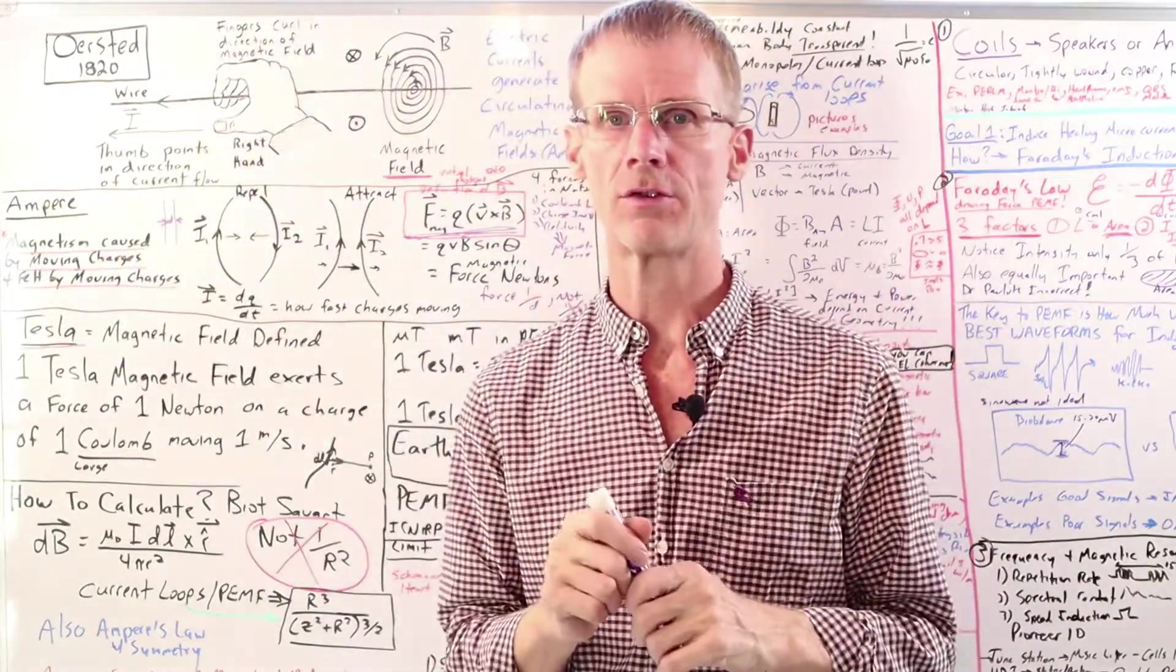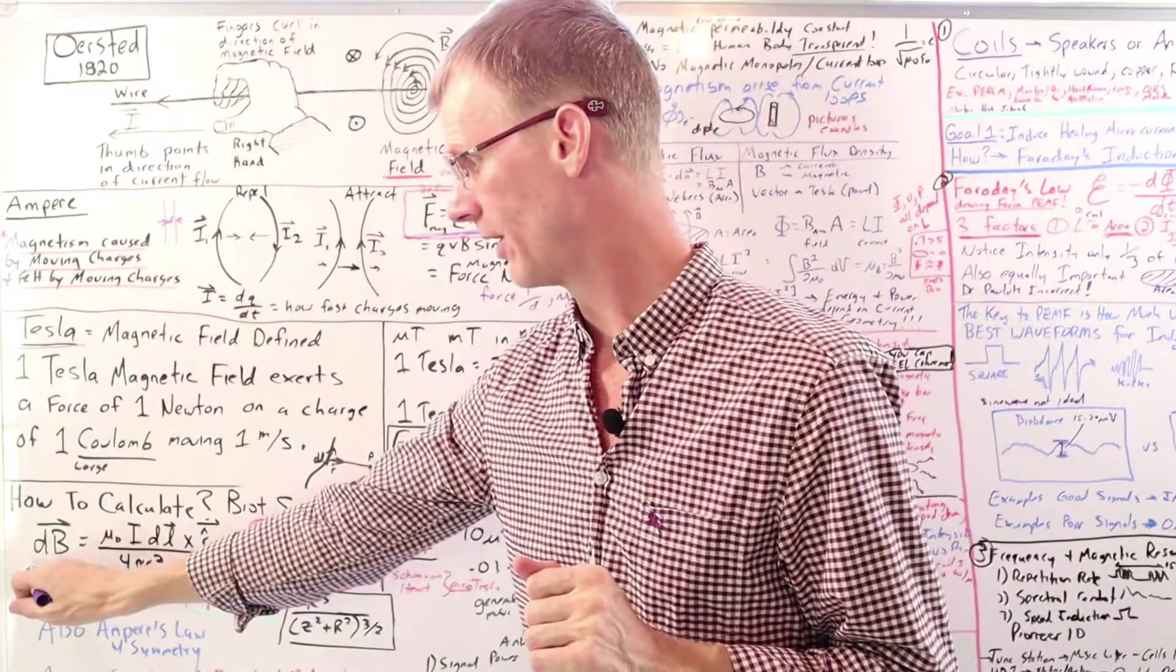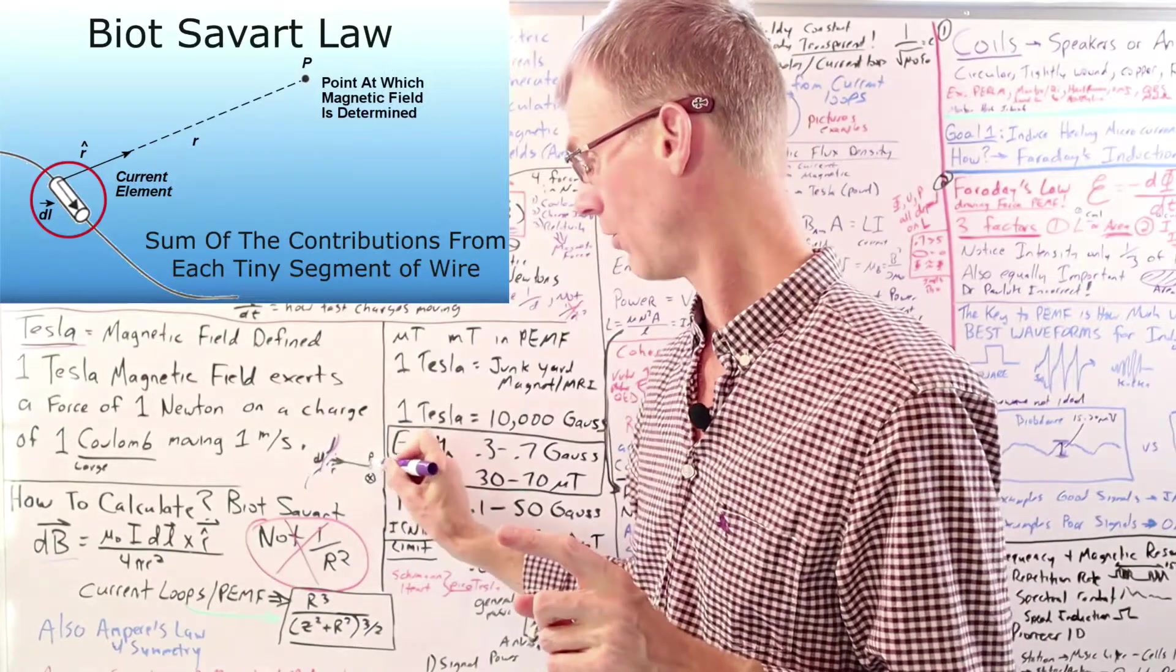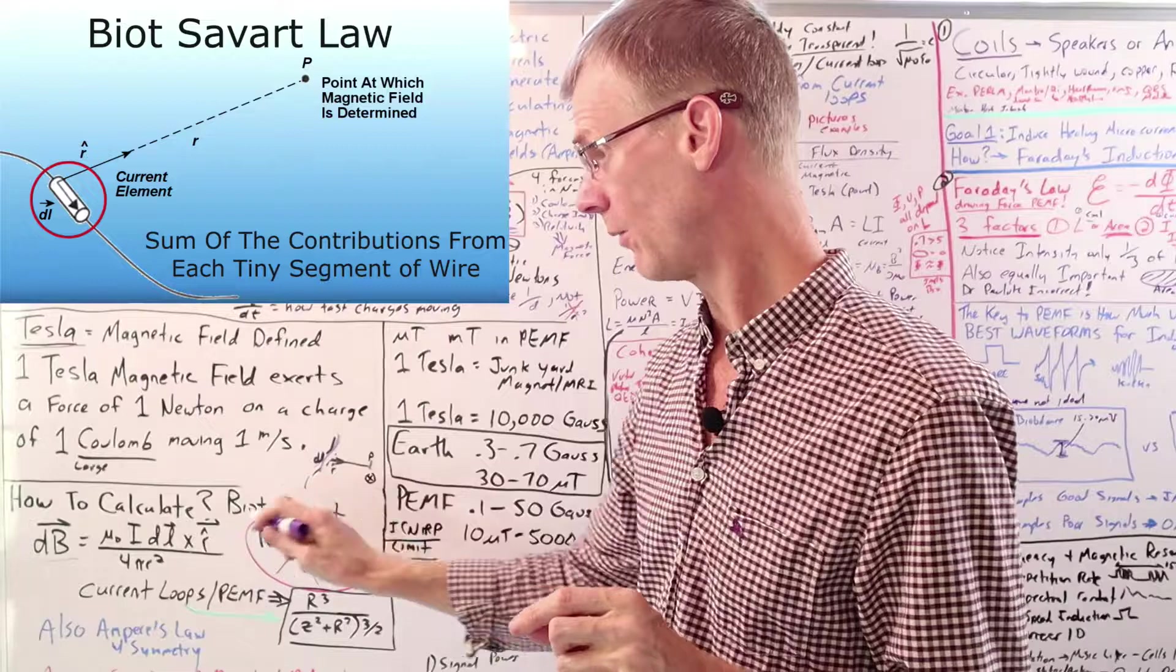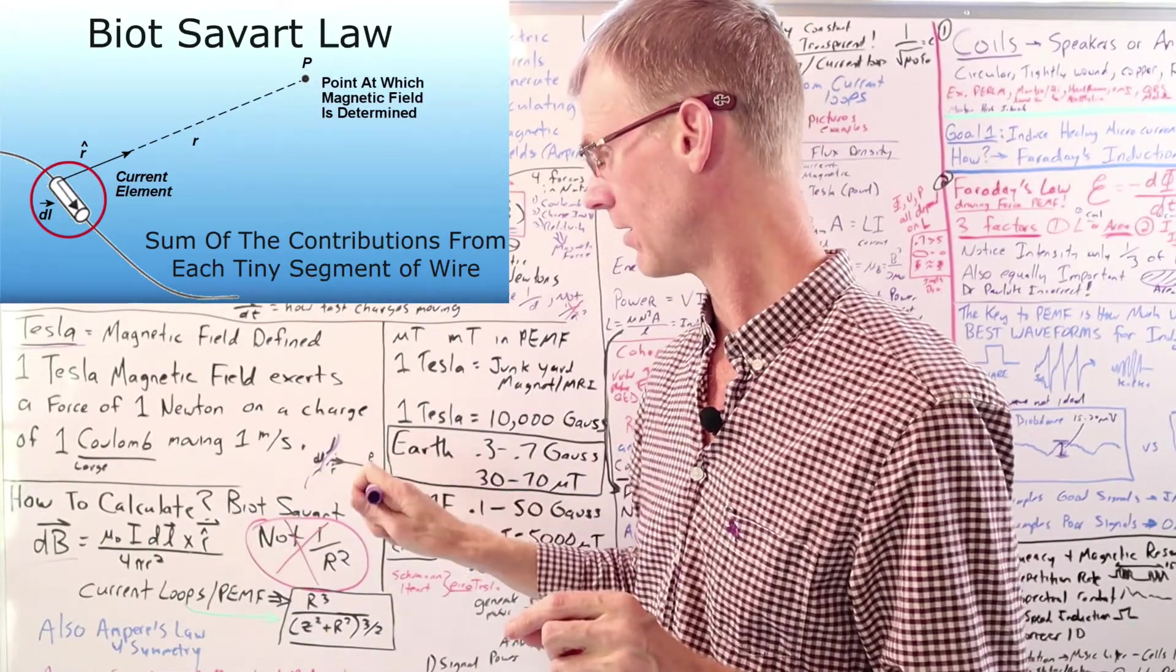So how do we calculate magnetic field strength? Well, we use what's called the Biot-Savart law. And it's this nasty little equation right here. So if we had a current going through this like a little wire here, and we want to know what's the magnetic field at this point P? Well, it turns out we use the Biot-Savart law, and it'll end up being a magnetic field going into the board.